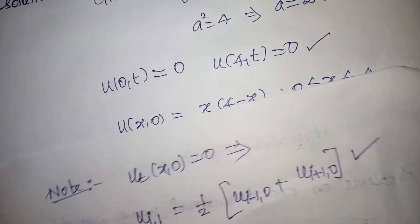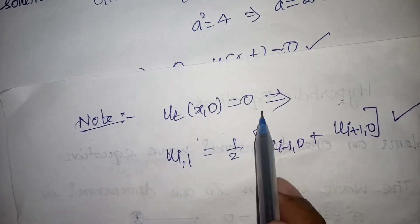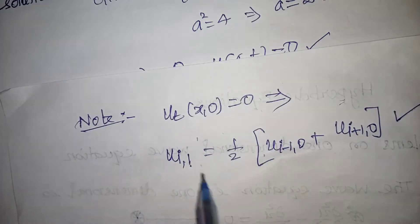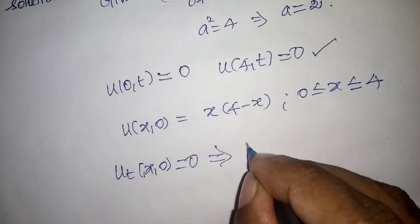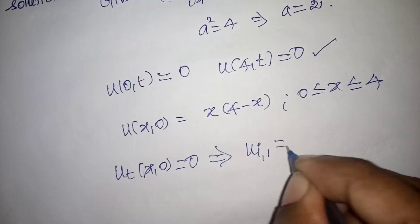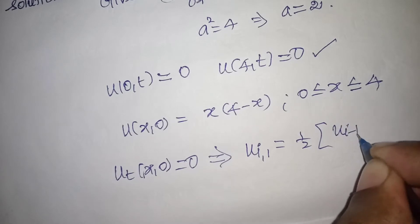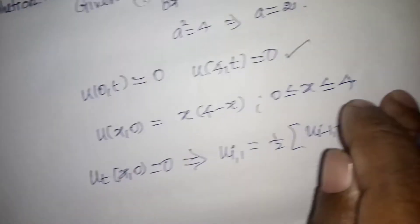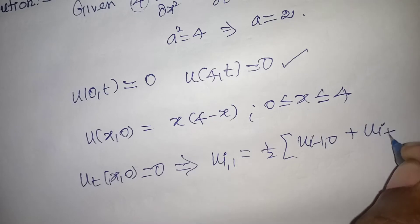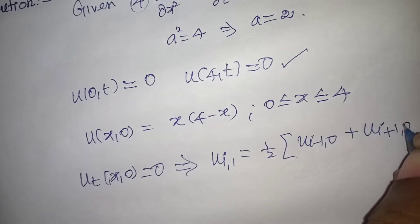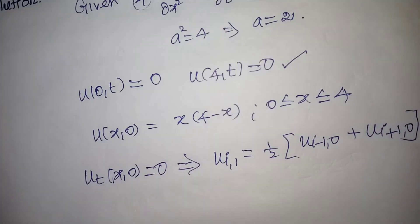So u(i,1) = (1/2)·[u(i−1,0) + u(i+1,0)]. The boundary conditions and initial condition are now fully established for the grid solution.